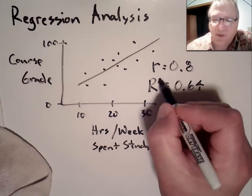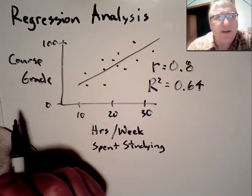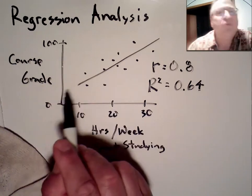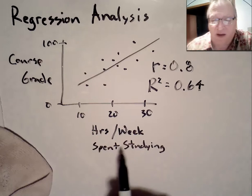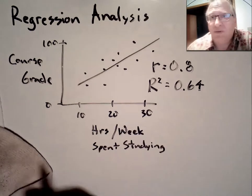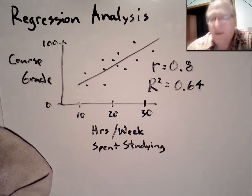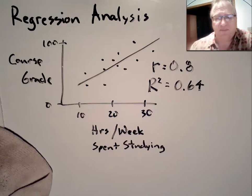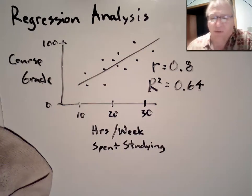Here's the important interpretation of the coefficient of determination: 0.64 means that 64% of the variation in course grade is caused by the number of hours per week students spend studying. There are other factors that affect student performance, which is why the coefficient of determination is only 64% — hours of studying don't explain all variation in course grade, but in this example it explains 64% of it. The coefficient of determination tells us how much of the variation in the dependent variable is based on the model input.